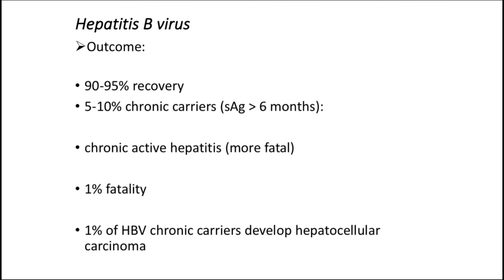Chronic hepatitis may be detected accidentally by finding elevated liver enzyme levels on routine blood chemistry. Chronically infected people are the major source of spread of the virus and are at risk of fulminant disease if they become co-infected with hepatitis D virus. Fulminant hepatitis occurs in approximately 1% of icteric patients and may be fatal.